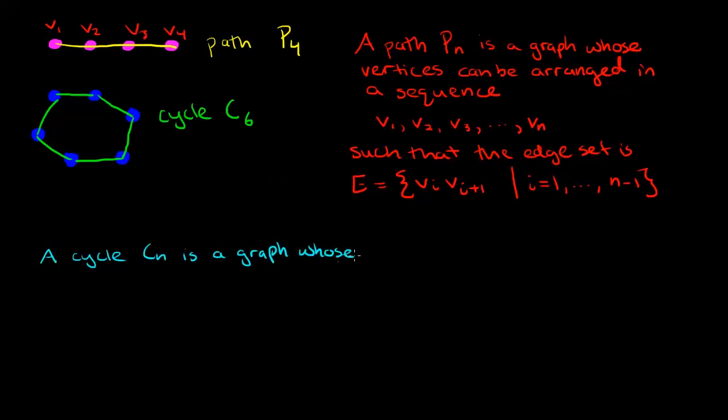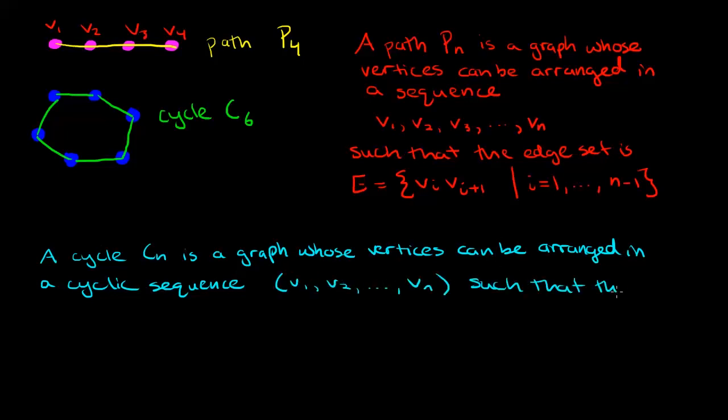And a cycle, which we denote by C sub n, is a graph whose vertices can be arranged in a cyclic sequence, V1, V2, up to Vn, such that the edge set is E equal to all of the possible edges, Vi, Vi plus 1, as well as V1, Vn. So it's very similar to a path, except that we loop around at the end to come back to where we started.